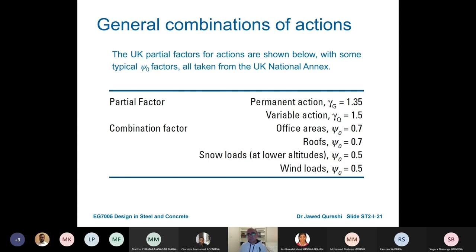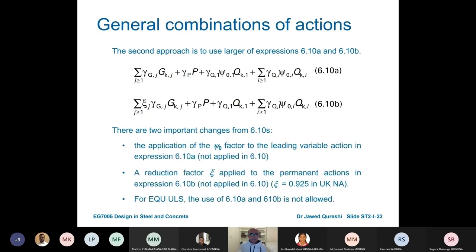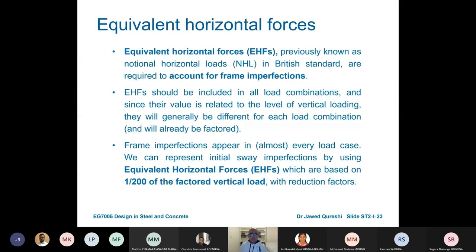The combination factors account for situations where more than two live loads or variable actions are applied at the same time. Up to now we assumed imposed load is applied at only one point, but it can also be applied simultaneously. There are two different equations, 6.10a and 6.10b.